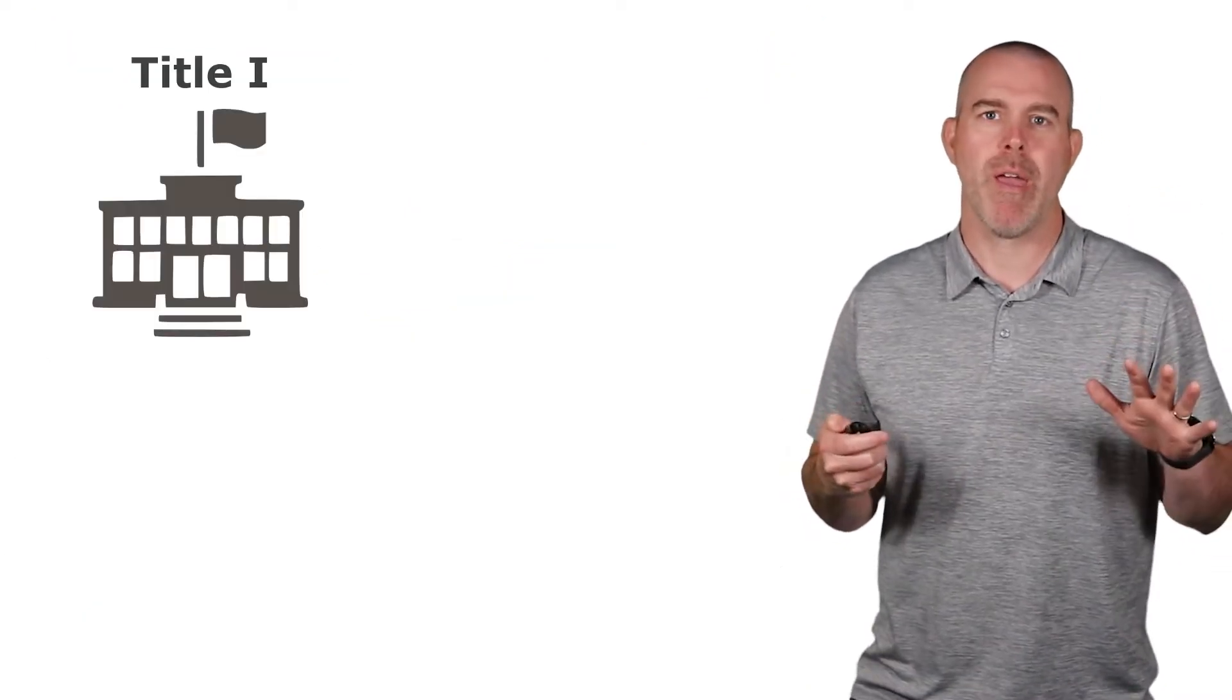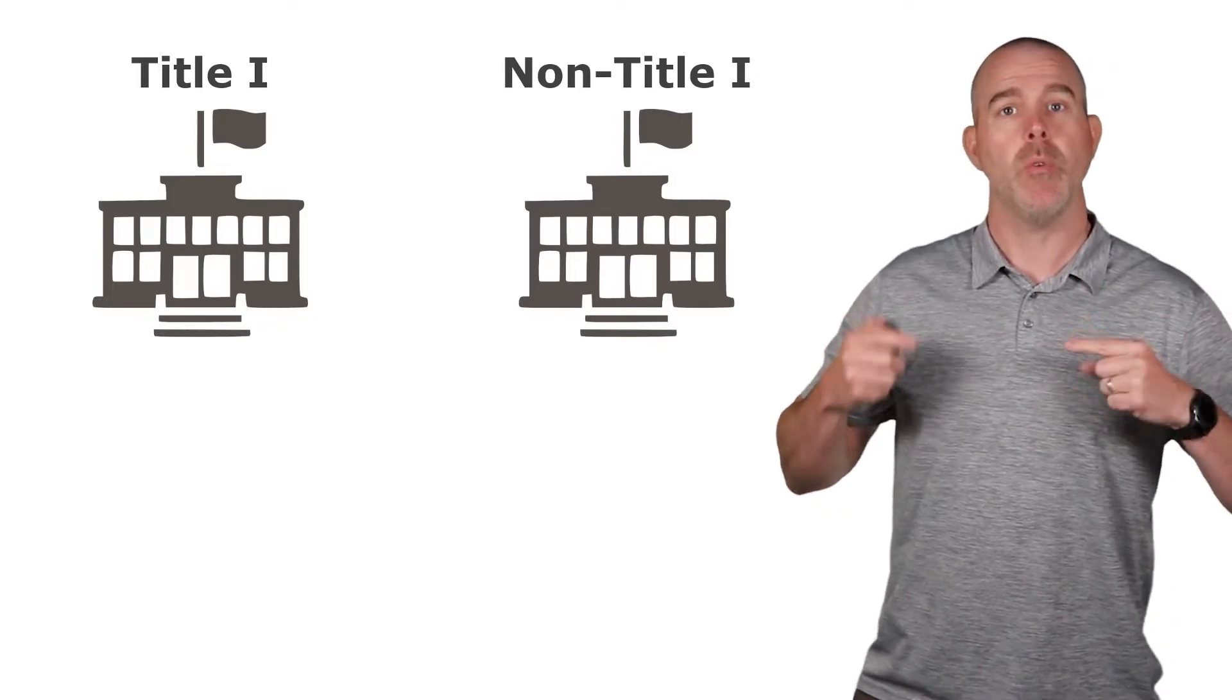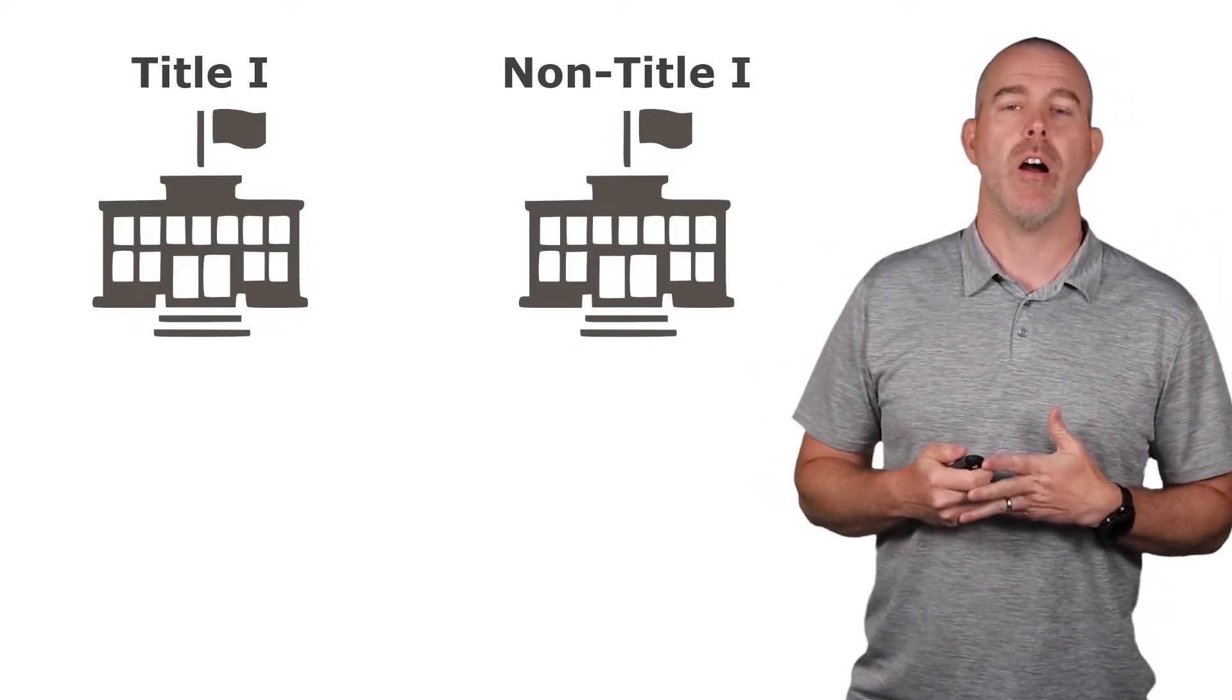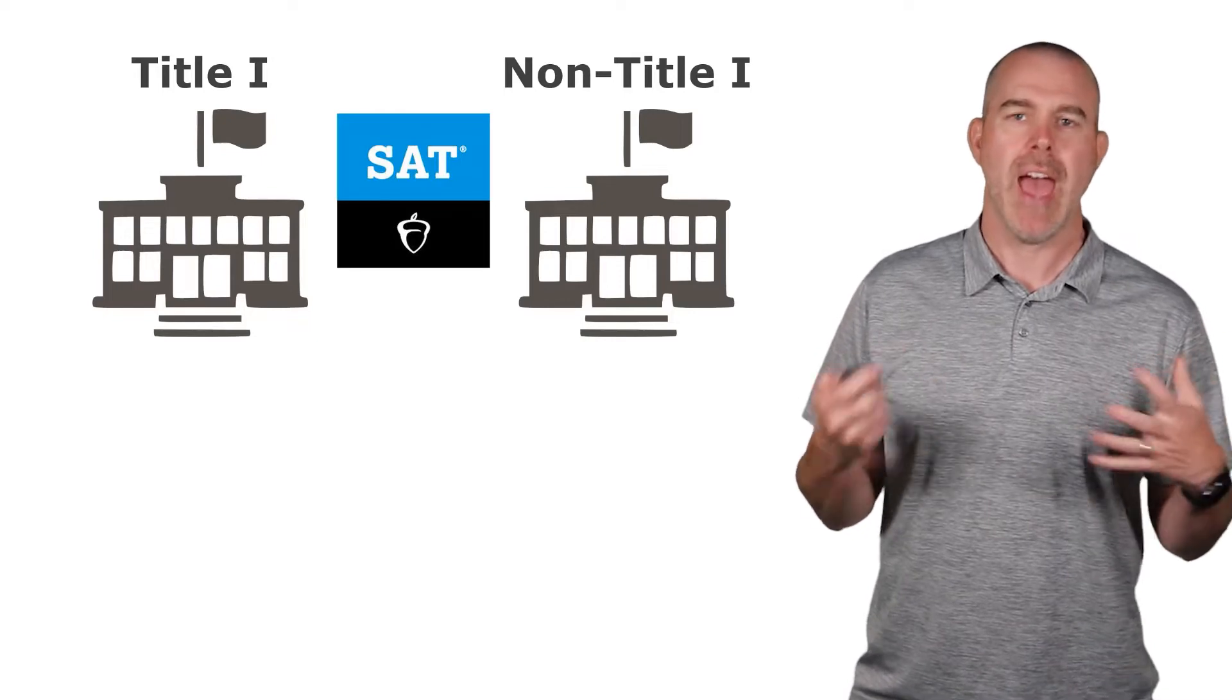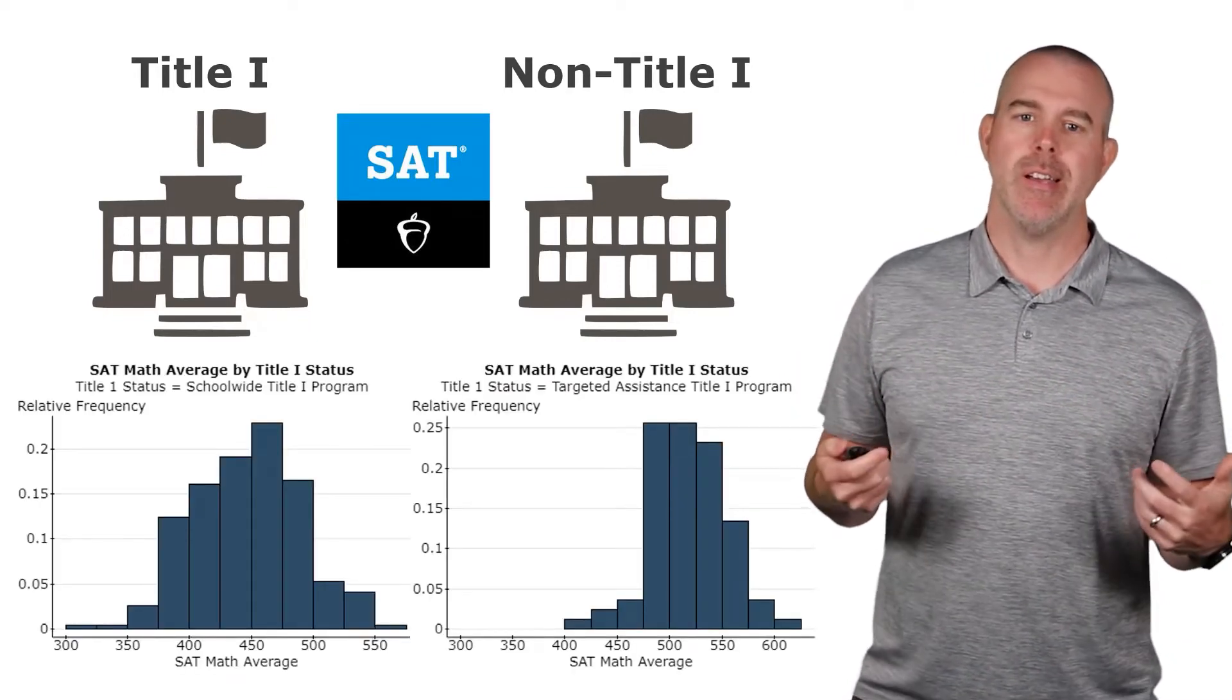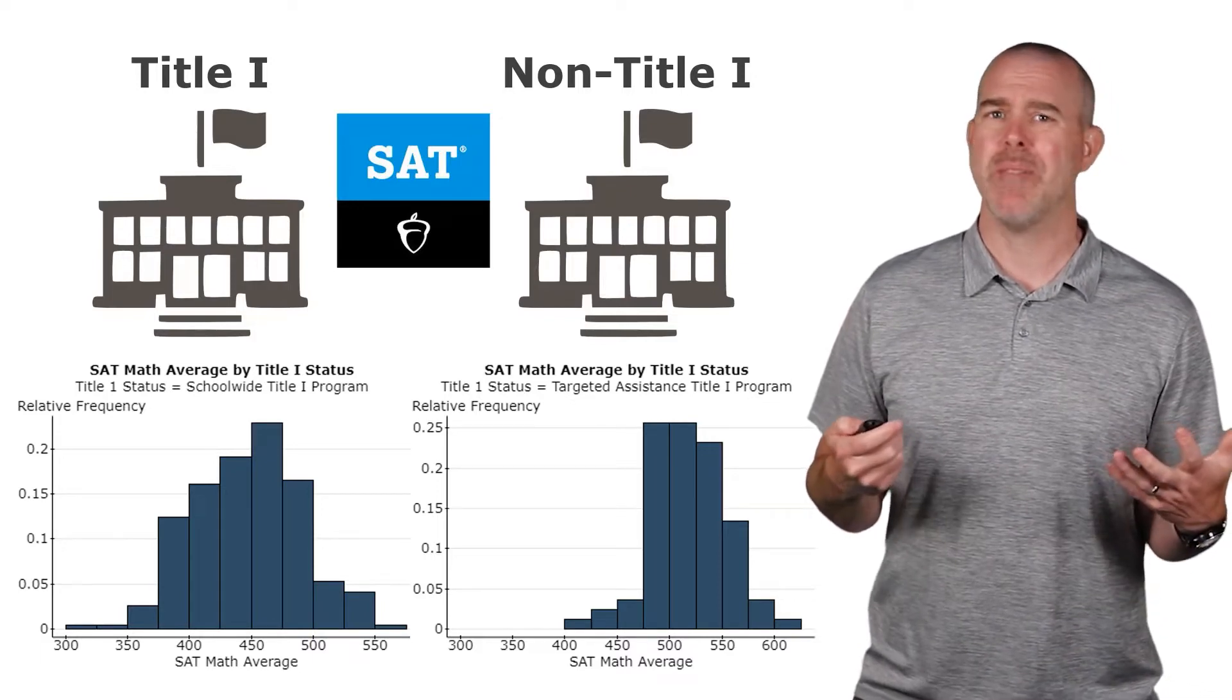What about our schools? We could compare Title I schools with non-Title I schools. Remember, Title I are the ones with a high proportion of students who are low income. And maybe we could compare the SAT scores. We could look at the distribution of the average SAT scores. So I've got those here, kind of, but not really bell-shaped. So that one's no good.